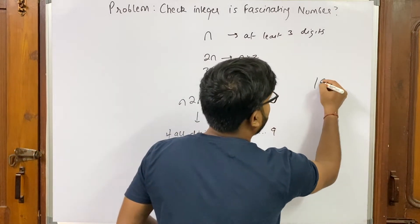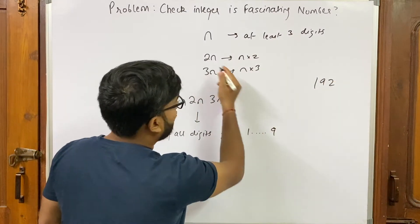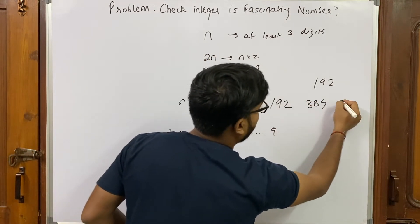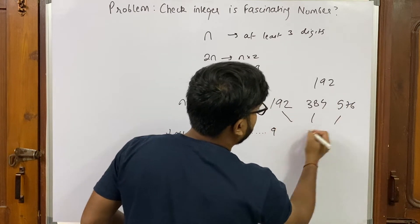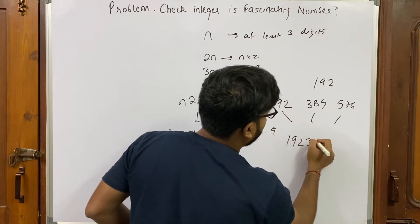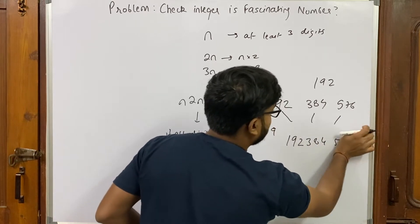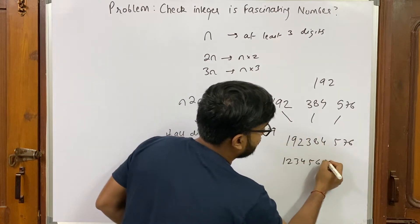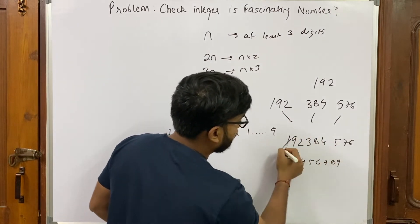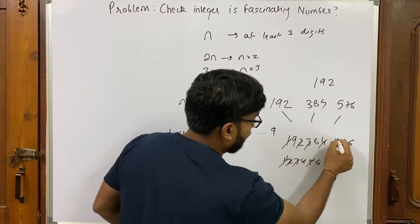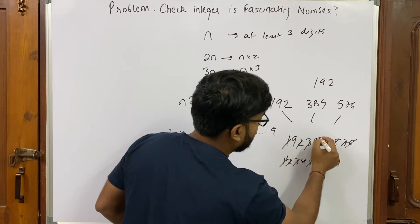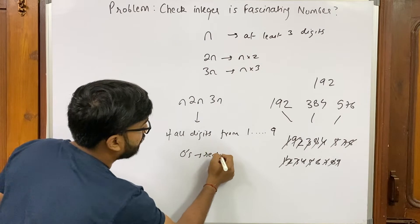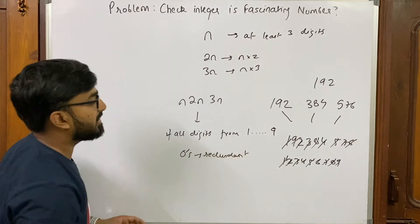Let's take an example: I have 192. 2n is 384, and 3n is 576. We concatenate these: 192-384-576. This contains all digits from one to nine exactly once, so 192 is a fascinating number.